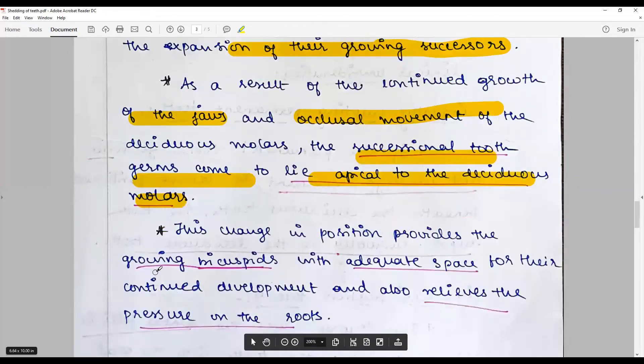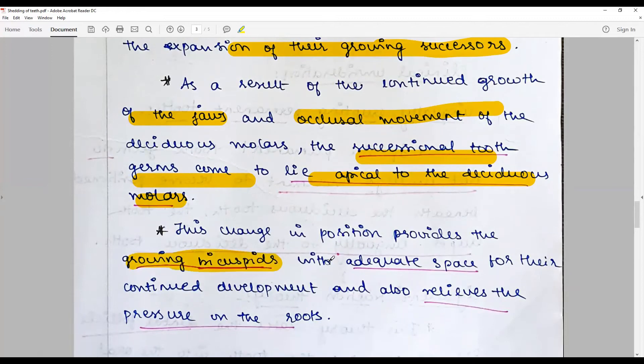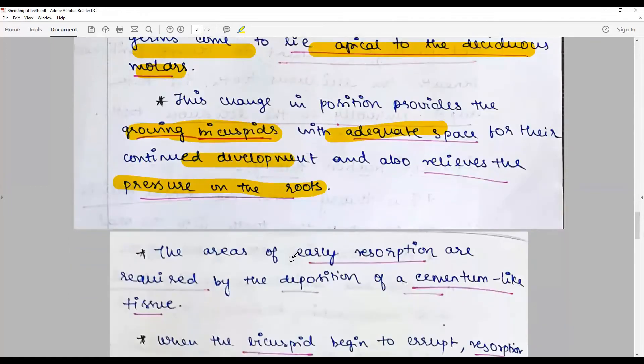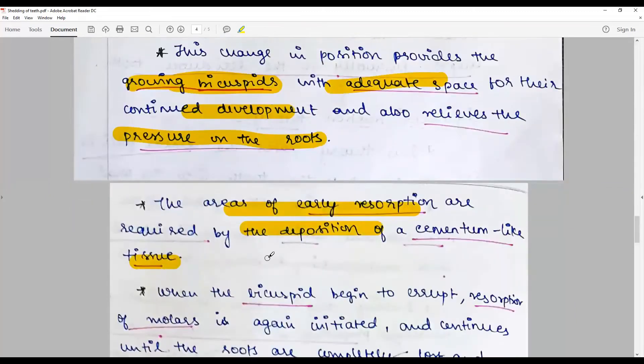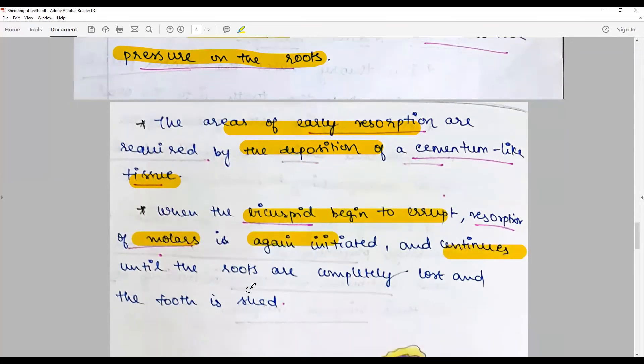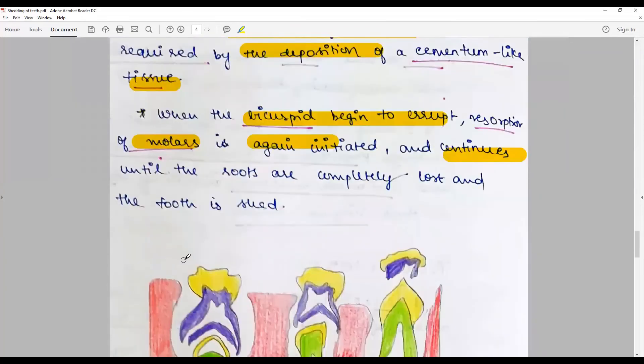This change in position provides the growing bicuspid of the succedaneous tooth with adequate space for their continued development and also relieves the pressure on the roots of the deciduous molars. The areas of early resorptions are repaired by the deposition of a cementum-like tissue. When the bicuspid begins to erupt, resorption of molars is again initiated then continues until the roots are completely lost and the teeth are shed.